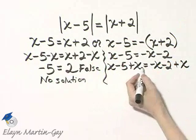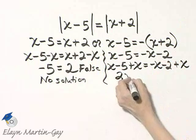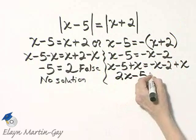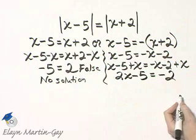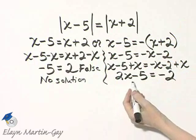Notice what happens on the left side, x plus x, that's 2x, minus 5 is equal to, these x's subtract out, and I get negative 2. Now, let's finish solving.